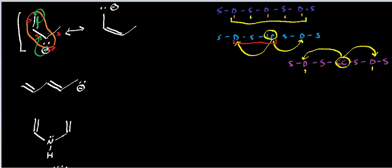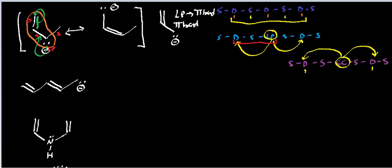Whenever you have a situation like this — the general rule is: the lone pair becomes a pi bond, and the pi bond that's already there becomes a lone pair. You throw this lone pair in to become a pi bond, and then this pi bond comes out and becomes a lone pair. You should always have the same things as before, they're just in different places. Lone pair is now a pi bond, pi bond is now a lone pair — and these are the two resonance structures.